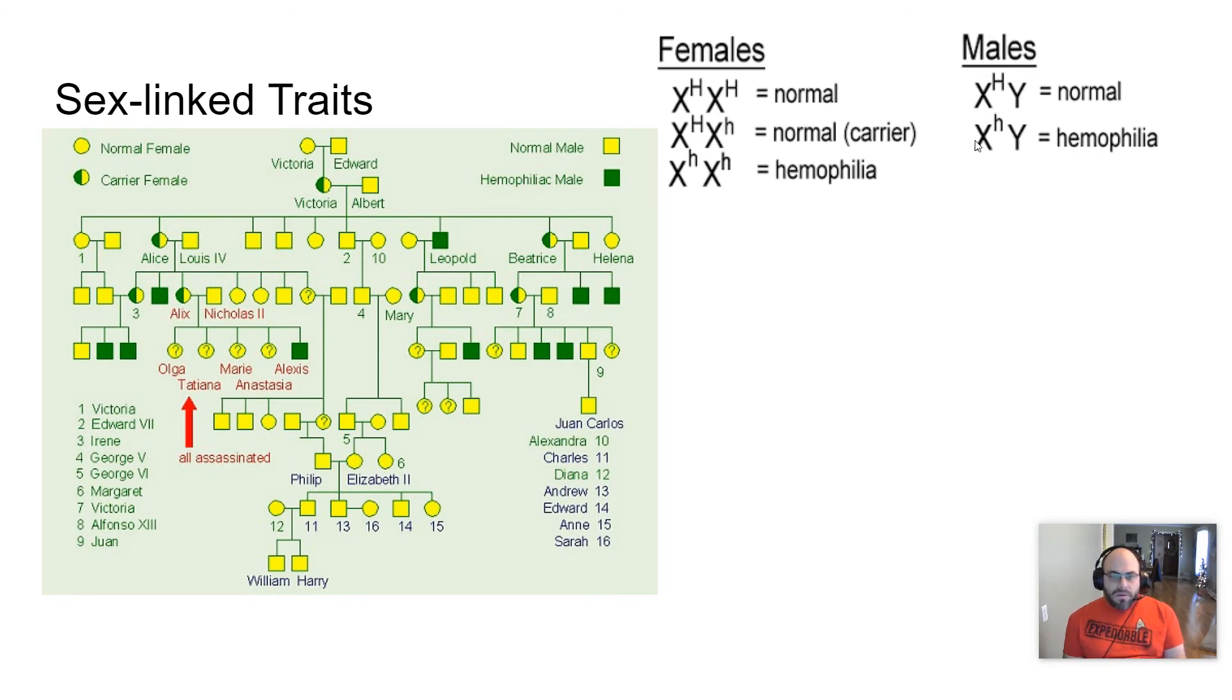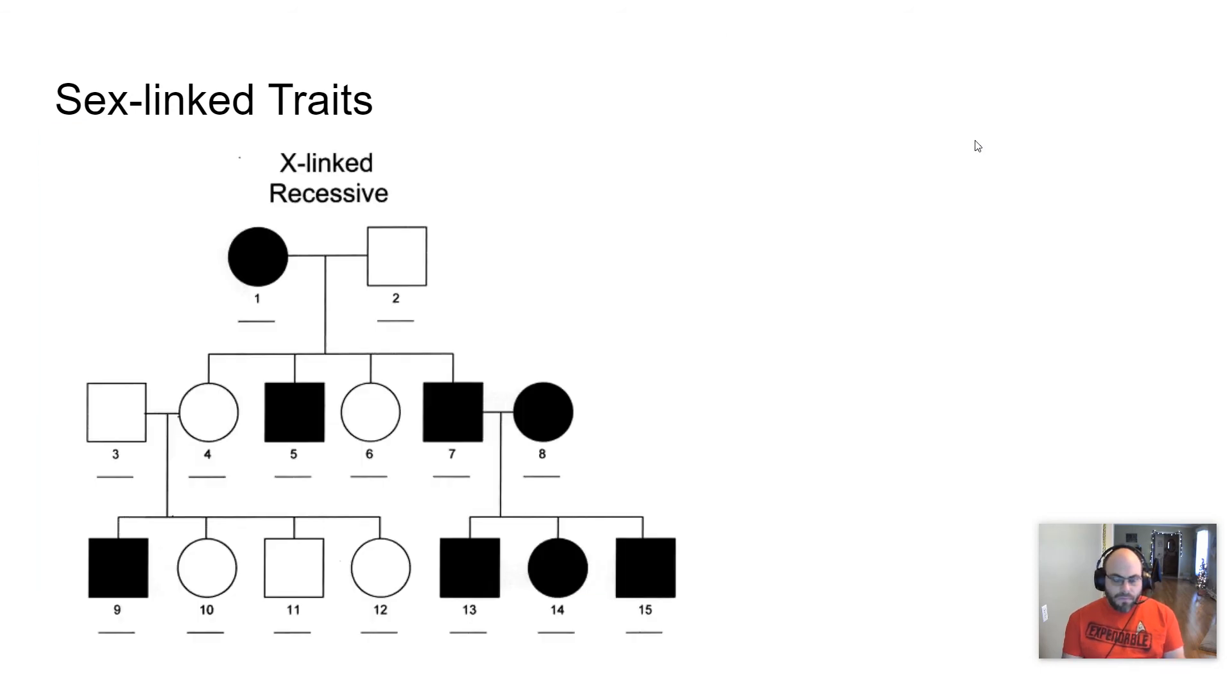One in 25 males are colorblind. One in 250 females are colorblind. And so it has to do with this frequency, the frequency of females being a lot less for sex linked traits.